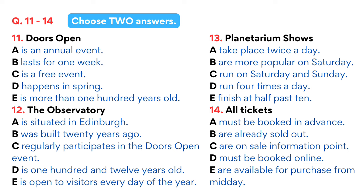There are many activities to choose from, so make sure you make the most of your visit. There will be planetarium shows throughout the day, running four times both today and tomorrow, Sunday. These are popular, so please note that we're operating a booking system for these shows. Tickets for the two morning shows — the first at 10:30 and the second at 11:30 — will be available on a first-come, first-served basis here at the Information Point. Tickets for the two afternoon shows at 2:00 pm and 3:00 pm will be released later at midday. Booking is essential as spaces go very quickly.